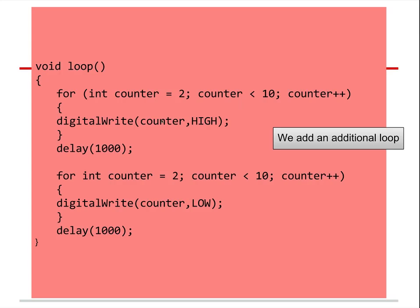The first for loop goes through pins two through nine, sets them all high, then there's a delay of one second. The second for loop writes them all low and waits a second. Because the loop itself happens so fast, you'll instantaneously think all the lights came on at once, and then a second later all the lights went off.